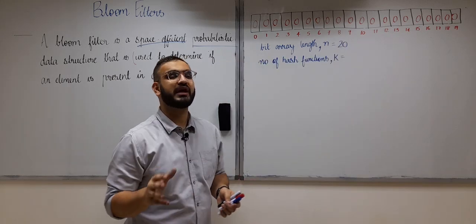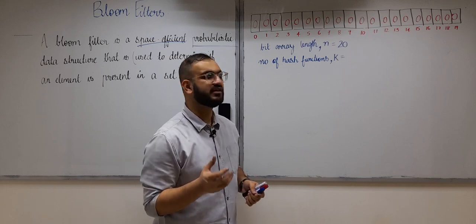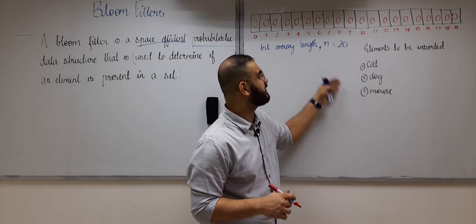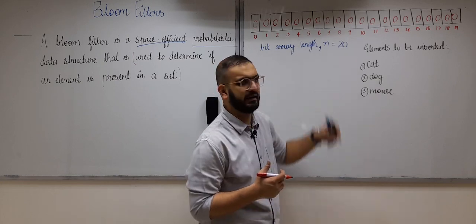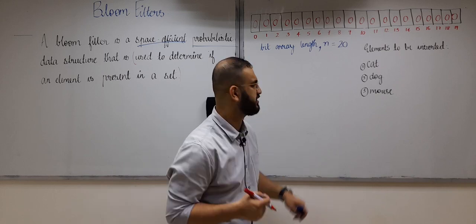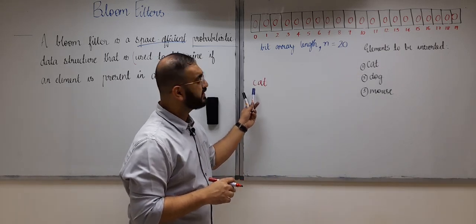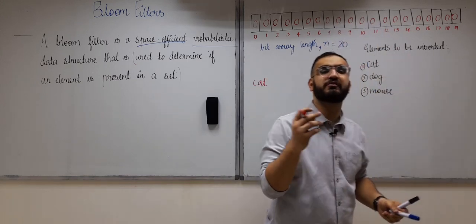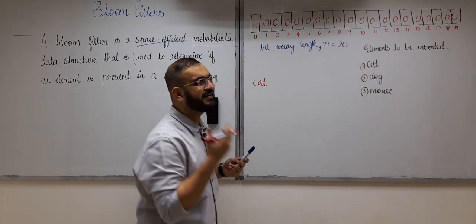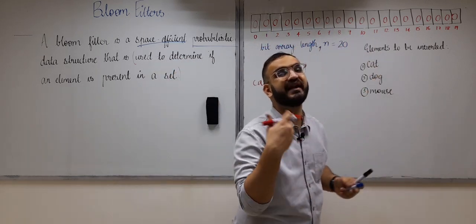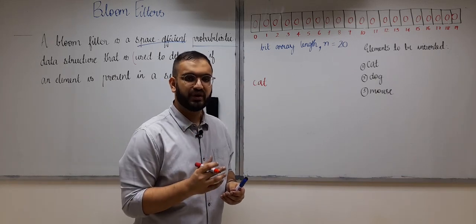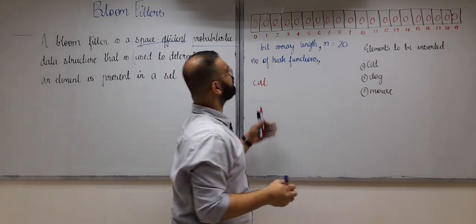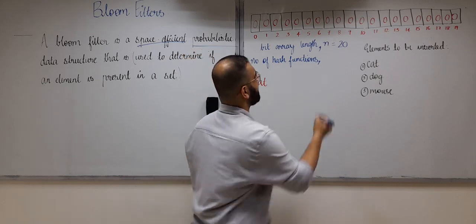Now let's perform the insert operation. Suppose I need to insert three words — cat, dog, and mouse — into this bloom filter. When I insert 'cat', some of the zeros will change to one. To determine which zeros change, you need to know that while performing any operation in bloom filters you need hash functions. Let's call the number of hash functions k.